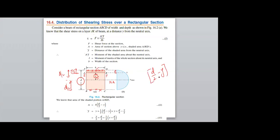Therefore, area A is B (the width of the cross-section) multiplied by the depth D/2 minus Y.